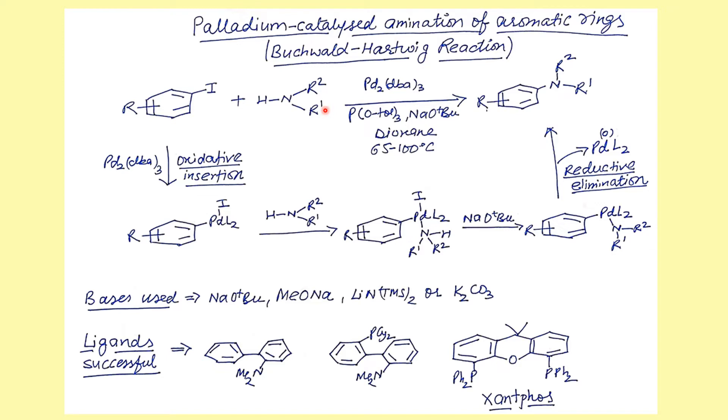If we look at the mechanism, it is absolutely simple. What you have is an aromatic iodide or aromatic halide. The first step is you take a palladium zero catalyst, oxidative insertion. This is what you form, this is the coupling that is taking place between the amine and the aromatic halide.